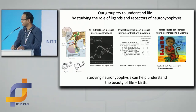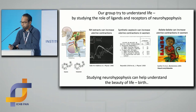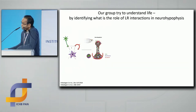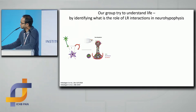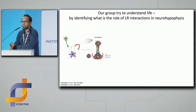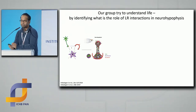Studying the neurohypophysis can help us understand the beauty of life, which is birth. We study using zebrafish — it's a vertebrate model organism. The neurohypophysis has multiple cell types, but the three major ones are glial pituicytes, endothelia, and axonal projections that arrive into the neurohypophysis. What we are asking is: what are the ligands and receptors that lead to the proper formation of the neurohypophysis using zebrafish as a model organism?